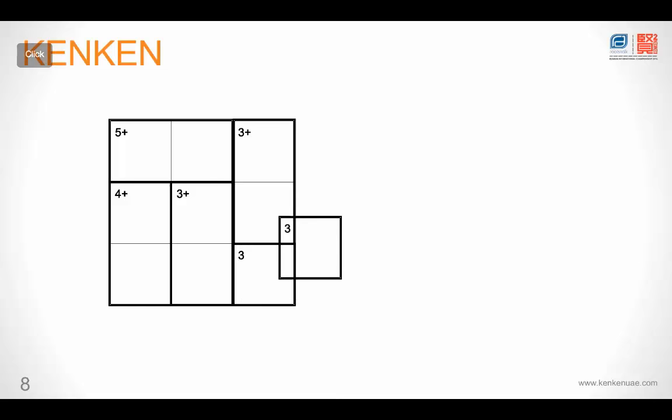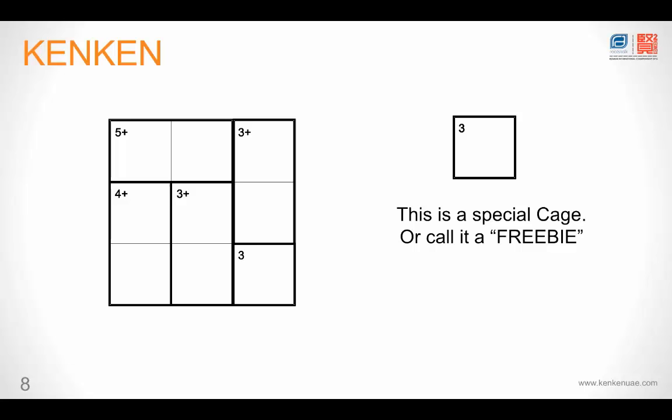Let's look at a special cage. This one here is called a freebie. The reason this is called a freebie is because this cage only has one box and just one number. In all the other cages, you will see that there is at least two boxes. There is a number and then there is a mathematical operator. This box here has only one box and just a number.